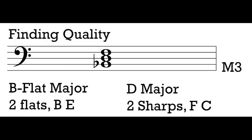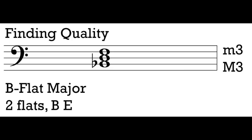What about the interval between the third and the fifth of the triad, between D and F? I want to analyze using the major scale of the lower note. The lower note is D, and the D major scale has two sharps, F-sharp and C-sharp. I ask myself: is F natural in the D major scale? The answer is no — the D major scale has an F-sharp. I took that F-sharp and changed it to an F natural, moving it closer to the D, making it smaller by a half step. If we take a major third and make it smaller by one half step, we have a minor third. So we have a major third between the root and the third, and a minor third between the third and the fifth.